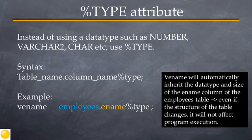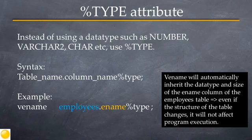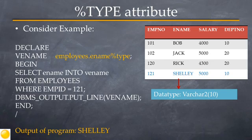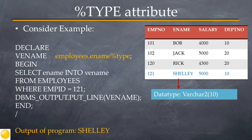During program execution, the vename variable will automatically inherit the same data type and size as the ename column of the employees table as it exists at the time of execution. This helps because even if you alter the table to modify column sizes, it will not adversely affect the program. The modified program will inherit VARCHAR2 with a size of 10 bytes, and when executed, the name 'Shelley' will be displayed on the screen.